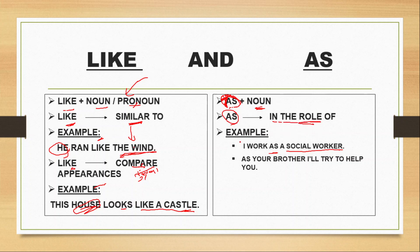Ab isme hai us rup me example, uska example as ka example hai. First: I work as a social worker. It means main social worker ki tariha kaam karta hoon. Then as kis ki tariha hoada hai? Isme kya hai uska rup kya hai? Woh kis ki tariha kaam karta hai, as a social worker.